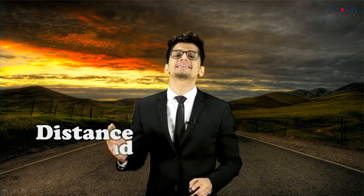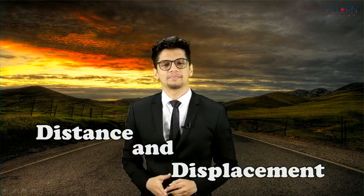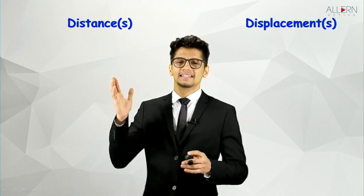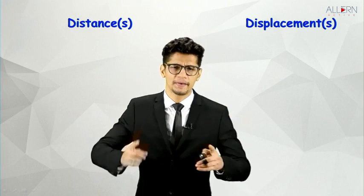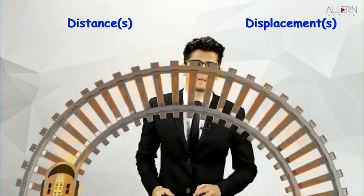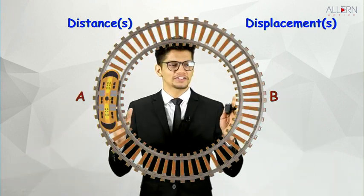Let us understand the first two physical quantities of this chapter: distance and displacement. First of all, what we should understand is that both distance and displacement are denoted by the small letter 's'. Let us understand these with the help of an example. Here we have a circular track.